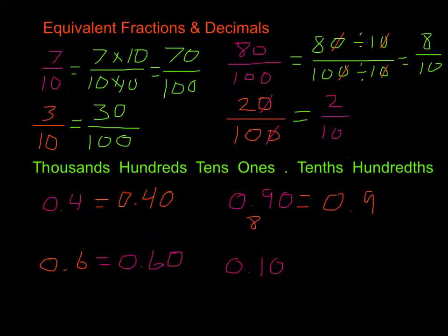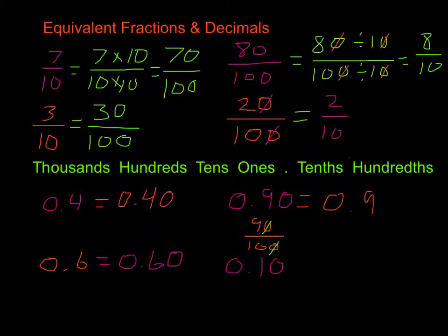Because if we were to write this as a fraction, it would be 90 one-hundredths, and we would want to take away one of the zeros from 90 and one of the zeros from 100, to make 9 tenths — so we have it as 9 tenths, 0.9. Down here we do the same thing. In our tenths position we have a 1, so it is going to be 0.1. We don't need to put the other zero on there, because the other zero would make it hundredths. And that is how we find or create equivalent fractions and decimals.